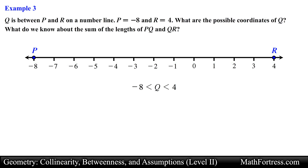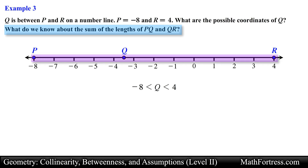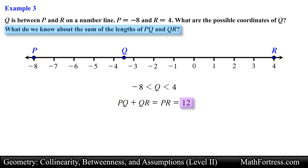For the second question, we know that point Q will split line segment PR into two segments — line segment PQ and line segment QR — since Q is between point P and point R. We know that the sum of these two smaller segments should add up to the length of segment PR, which is equal to 12. And this is our final answer. Let's try the next example.